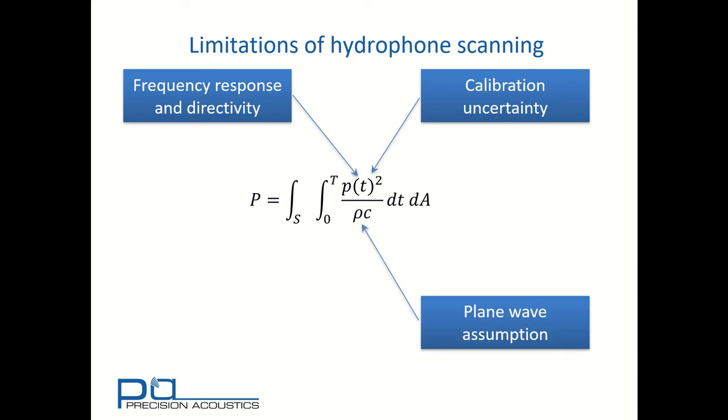And in order to convert from a pressure to a time average intensity signal, we've had to make use of the plane wave assumption, which may or may not be appropriate for the field we're considering. Finally, there may be positional inaccuracies, or we may have insufficiently sampled the field when we defined our measurement locations.